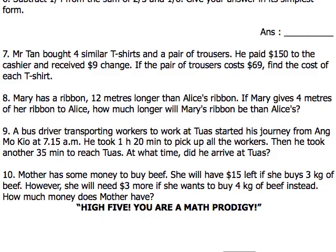It says that mother has some money to buy beef. We don't know how much money it is, but we know that she's going to buy some beef. She will have $15 left if she buys 3 kilograms of beef. However, she will need $3 more if she wants to buy 4 kilograms of beef instead. How much money does mother have?